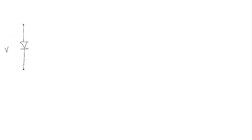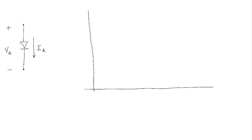Think about a diode with voltage across it called VD — plus and minus — and current ID. If we plot the characteristic on the forward bias voltage side, you get a curve like this. The forward voltage cutoff is somewhere around 0.7 volts.